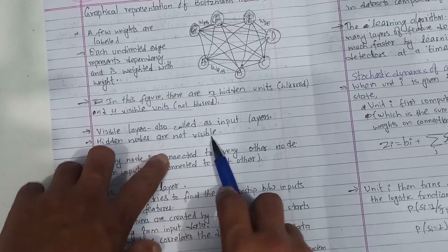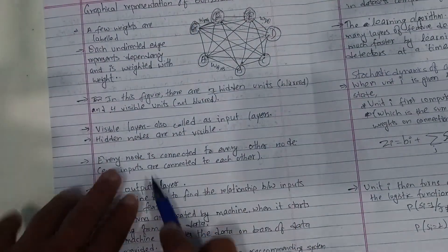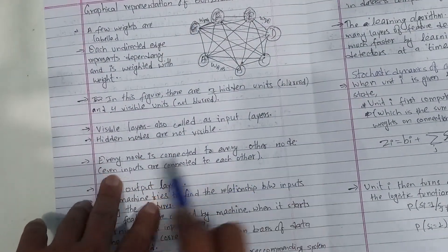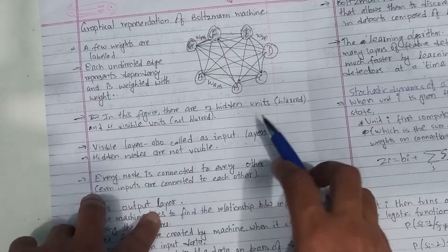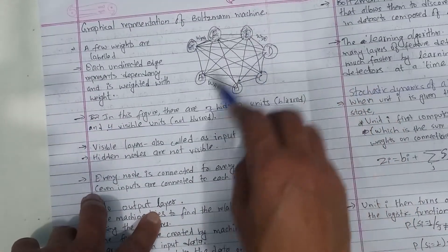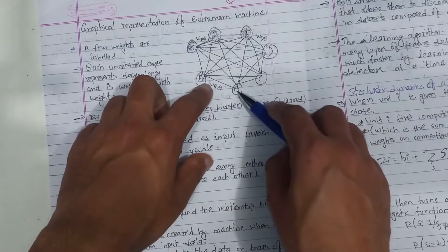Hidden nodes are not visible. Every node is connected to every other node. This is a middle layer. Every node is connected to each other node.